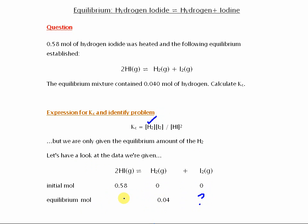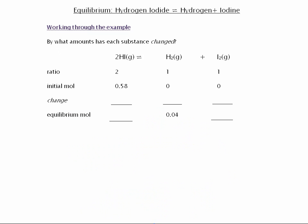Now we want to know the equilibrium amounts of the other two species. So we can put that data into this equation and work out Kc. So to do that, we want to ask, by what amounts has each substance changed?